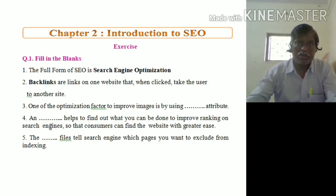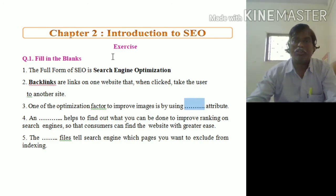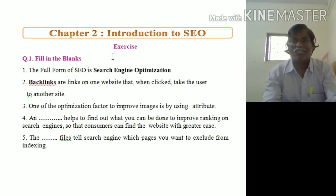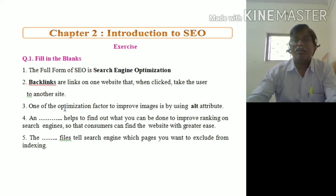Third fill in the blank: one of the optimization factors to improve images is by using the blank attribute. When an image is not displayed on the webpage, we use an alternative to that image. That attribute for the alternative of the image is called the ALT attribute, and it is used here for the optimization factor to improve images.